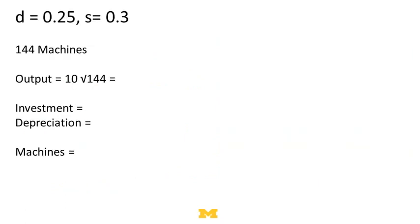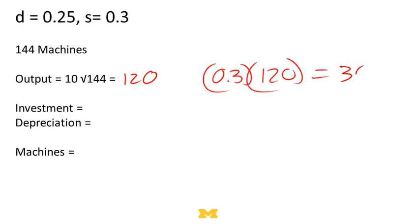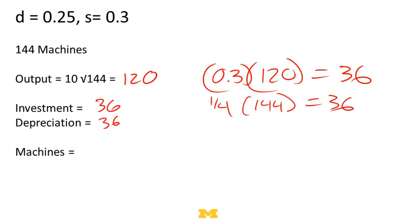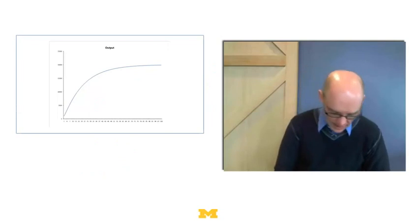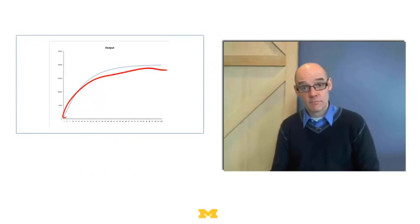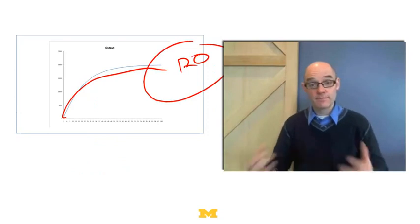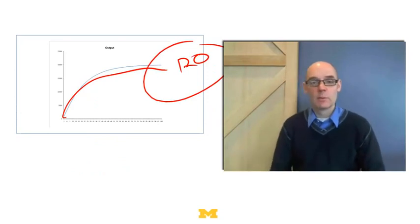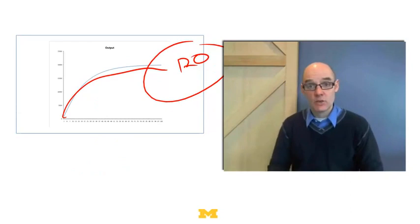Let's check. With 144 machines, output is 10 × √144 = 120. Savings: 0.3 × 120 = 36 new machines. Depreciation: 144 × 0.25 = 36 machines. We invest in 36, 36 wear out, so the total number stays at 144. So 144 is the equilibrium — new machines and worn-out machines exactly cancel out. Output in the long run is 120.